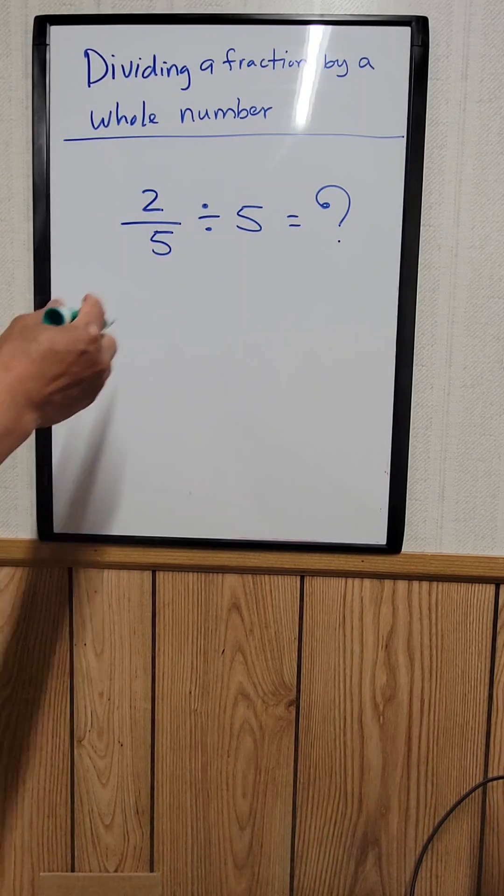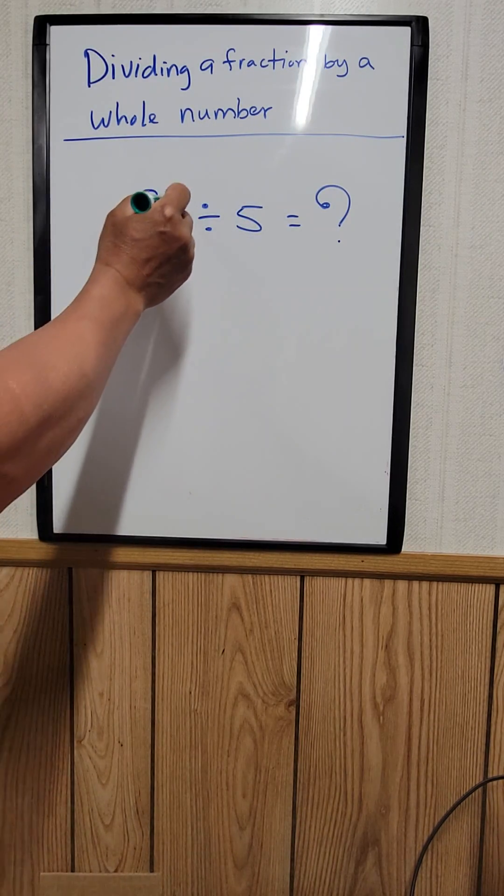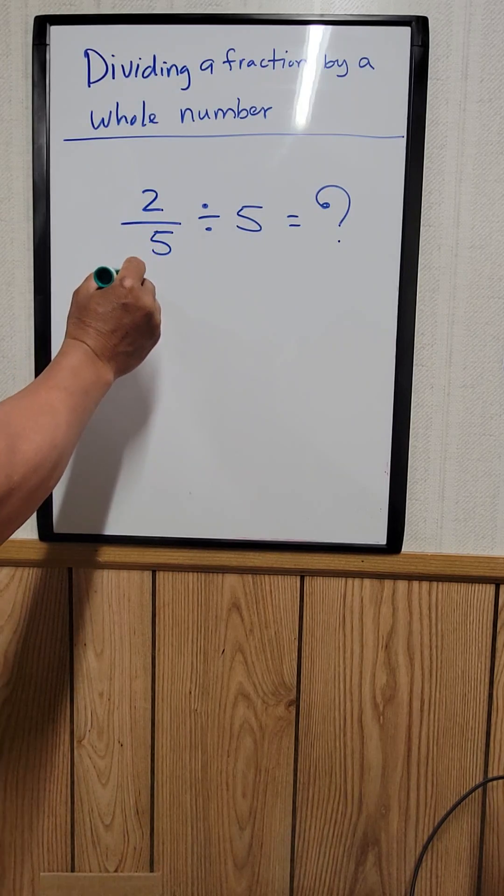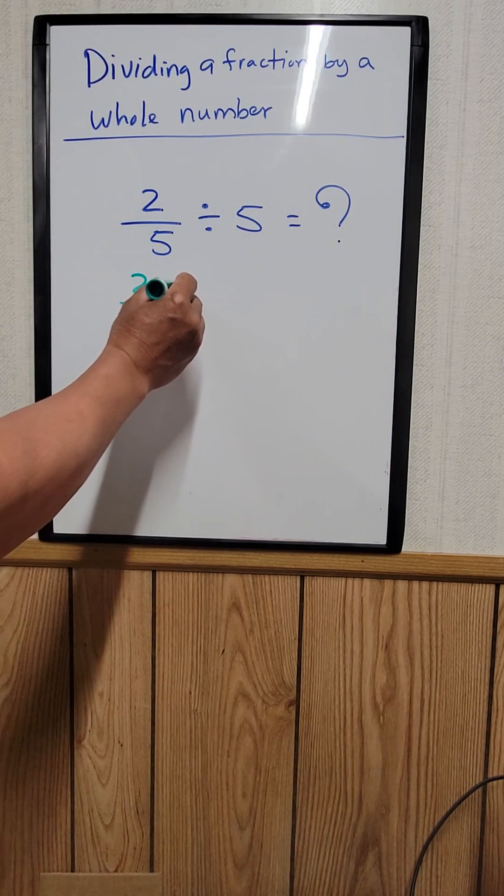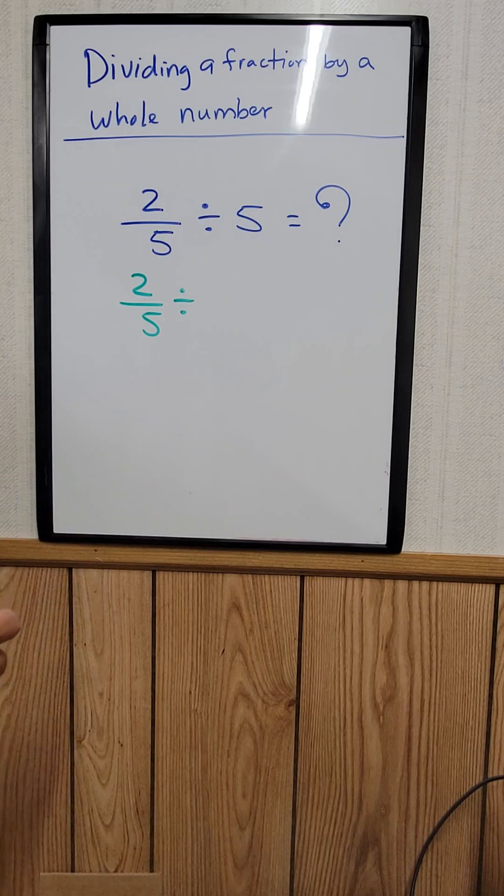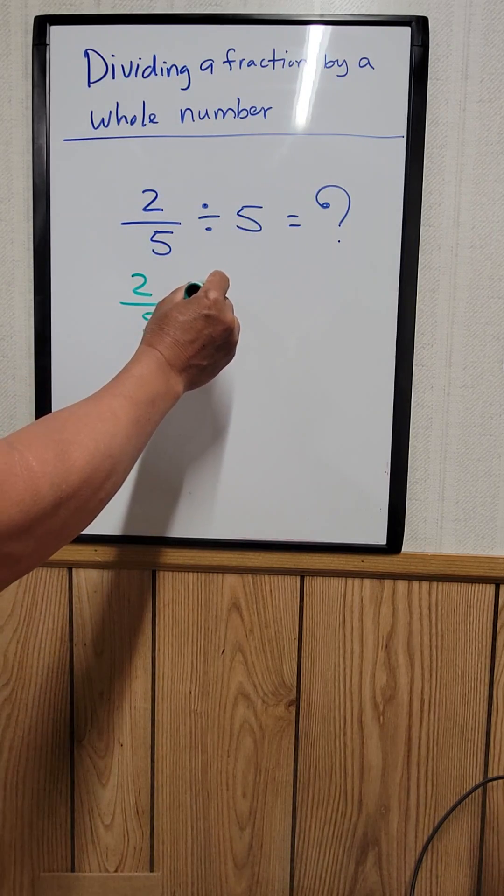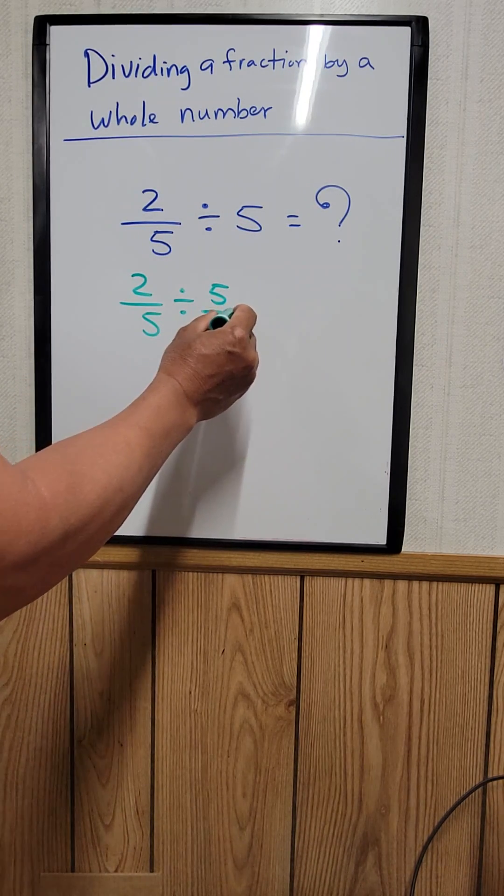So the first thing we need to do is we need to rewrite this. So 2 fifths divided by 5, you can write that as 5 over 1.